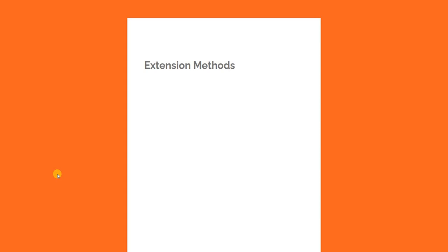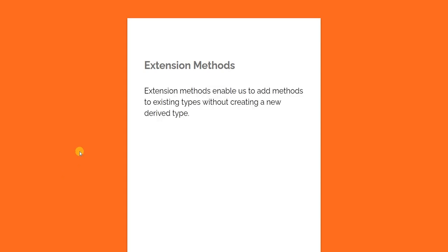Hello everyone and welcome to .NET Core Central. In today's video, I'm going to talk about extension methods in C#. Extension methods enable us to add a new method to an existing type without creating a new derived type. So we do not have to inherit from an existing type — we can just attach the method to an existing type. When we get into the implementation, it will be more clear what I mean by that.